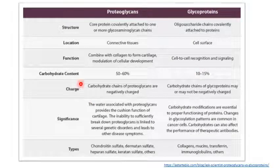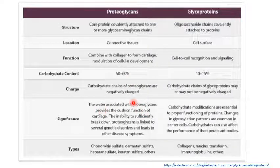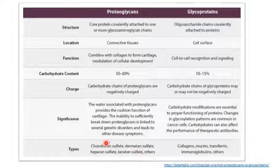The carbohydrate content is 50–60% in proteoglycans and 10–50% in glycoproteins. The carbohydrate charge is negative in proteoglycans, which allows them to attract water, providing a cushion function for cartilage and other tissues. In glycoproteins, carbohydrate modifications are essential for protein function, interaction, and recognition, and also affect the performance of therapeutic antibodies — their efficacy and therapeutic effect depend on their glycosylation pattern. Examples of proteoglycans include chondroitin sulfate, dermatan sulfate, heparan sulfate, and keratan sulfate; examples of glycoproteins include collagen, transferrin, immunoglobulins, and mucins.